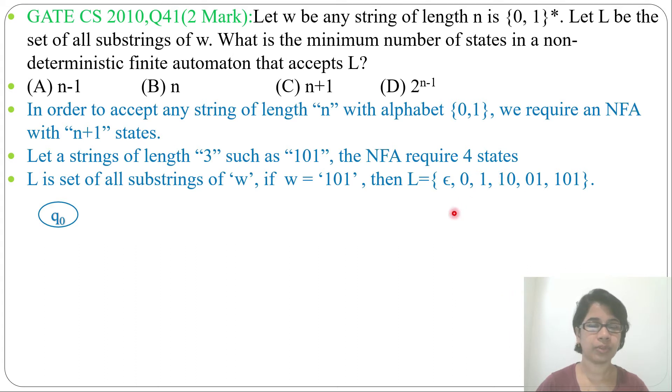So first, design an NFA that will accept "101". For "101", length is 3, we require 4 states: q0, q1, q2, q3. Now from q0 by 1 it will go to q1, from q1 by 0 it will go to q2, from q2 by 1 it will go to q3. Now this is an NFA that accepts string "101".